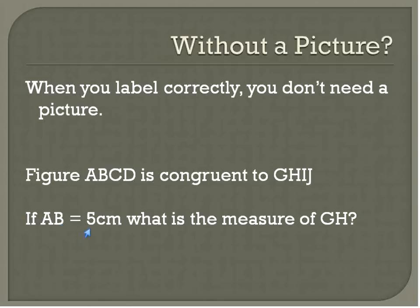If A, B is equal to five centimeters, what is the measurement of G, H? We can see that A, B is in the same location in our label as G, H. So we know that line segment A, B is congruent to line segment G, H. So we can without even having a picture. I don't know. This could be a square or a rectangle. It could be a rhombus or a trapezoid. It could be any kind of quadrilateral.